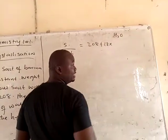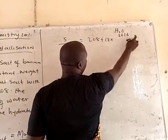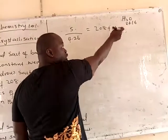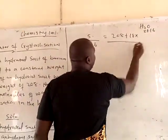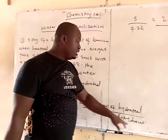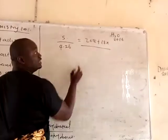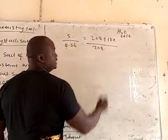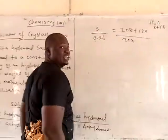18x represents the water of crystallization, where 18 is the molar mass of water (2 + 16 = 18), and x is what we want to find. You divide everything by the molar mass of the anhydrous salt. The anhydrous does not contain water of crystallization, so you just divide by 208. All we need to find is x.